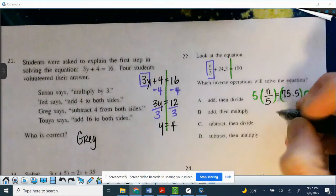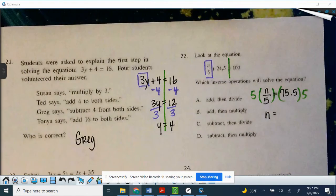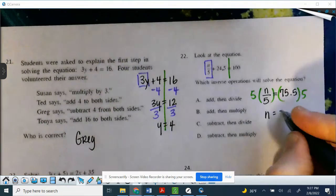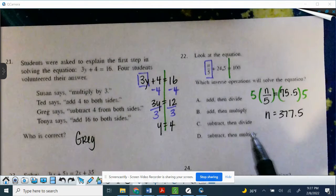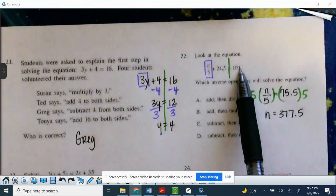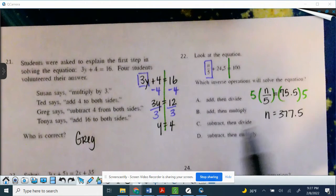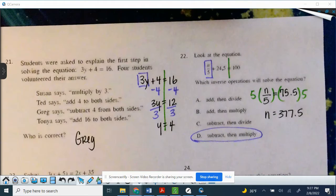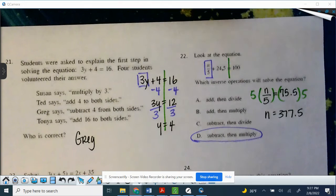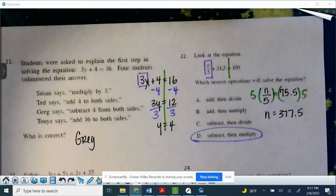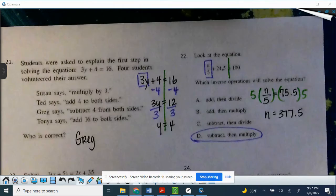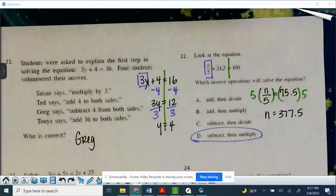And so n equals, I need the calculator, 75.5 times 5, 377.5, which is irrelevant because all you need to know is to subtract first and then multiply, don't divide. Look, they gave you all the dummy answers there, and by dummy answers I mean the ones where you're like, oh man, I knew that. So they know your shortcomings or your distractions, and they're going to give you as many of those as answer choices as possible.